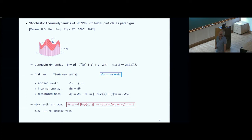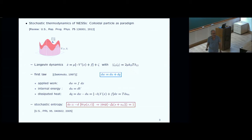About 20 years ago, Ken Sekimoto pointed out that you can cast Langevin equations of this type into the form of a first law if you identify terms properly. When the potential is constant, applied work is force times displacement, internal energy is position within the potential, and heat is the applied force times displacement — something you would have naively guessed. All these quantities are now defined along a fluctuating trajectory. Dissipated heat in the bath can be related to an entropy change of the medium, giving a fluctuating contribution to the entropy of the medium.